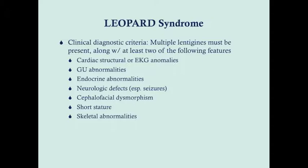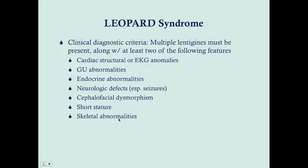In addition to the lentigines, the patient needs to have at least two of the following features: cardiac or structural abnormalities; genitourinary abnormalities, such as hypospadias; endocrine abnormalities; neurologic deficits, particularly seizures; cephalofacial dysmorphism — any of the facial features seen in Noonan Syndrome, like hypertelorism, a pointy jaw, or a high anterior hairline; short stature; and skeletal abnormalities.